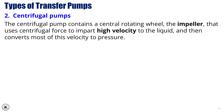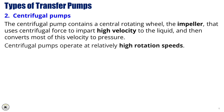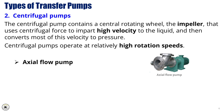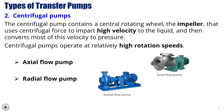Moving on to the second main type of transfer pumps: centrifugal pumps. A centrifugal pump works quite differently from a positive displacement pump. At its core, it contains a central rotating wheel called the impeller. This impeller spins at high speed, using centrifugal force to accelerate the fluid and give it a high velocity. Most of that velocity is then converted into pressure, allowing the fluid to be pushed through the system efficiently. These pumps are known for operating at relatively high rotational speeds, making them well suited for handling large volumes of low viscosity fluids. There are two main types: axial flow pumps, which move fluid primarily in a straight line along the shaft, and radial flow pumps, where the fluid is directed outward perpendicular to the shaft.